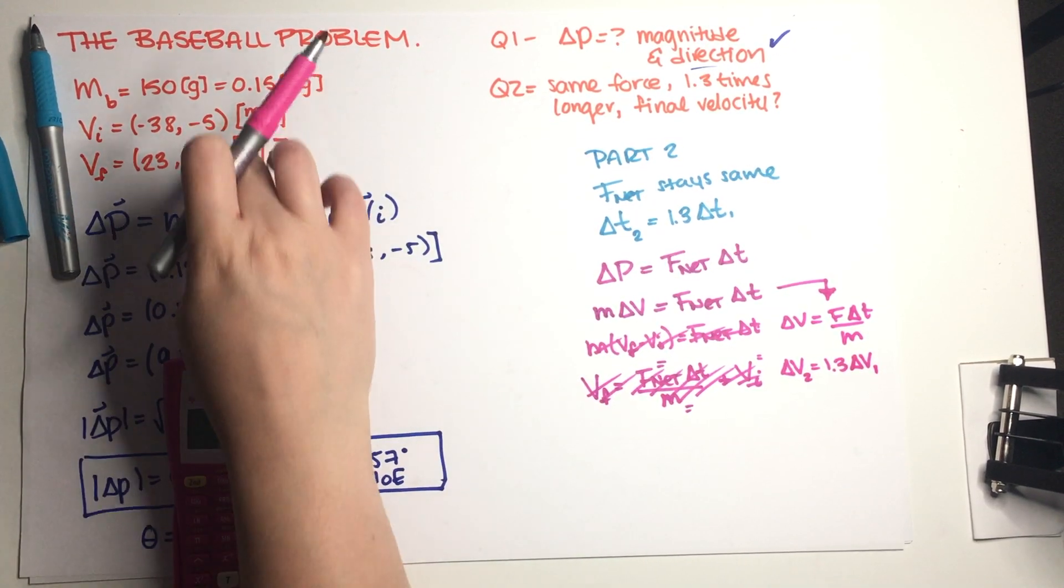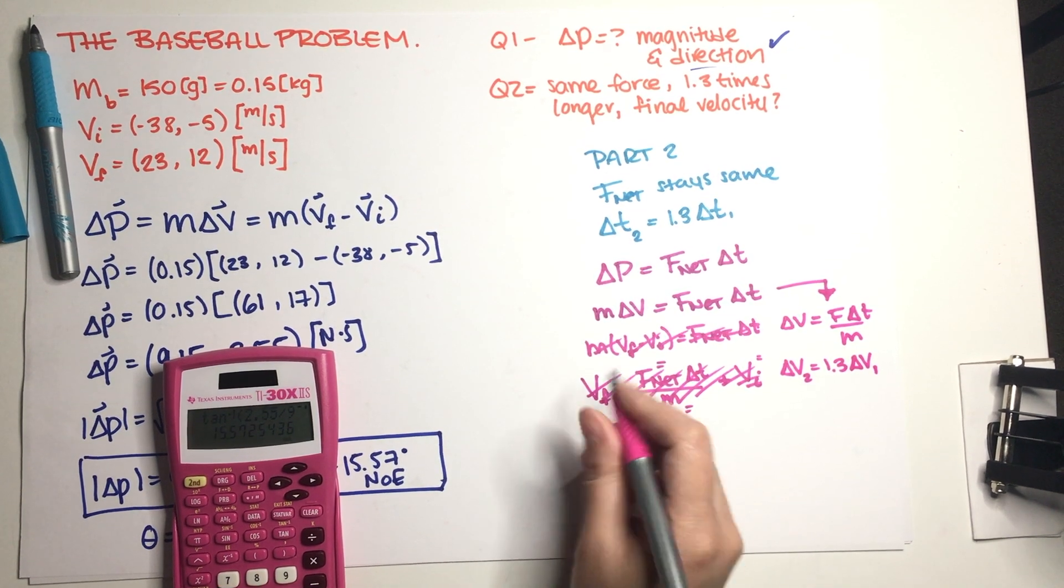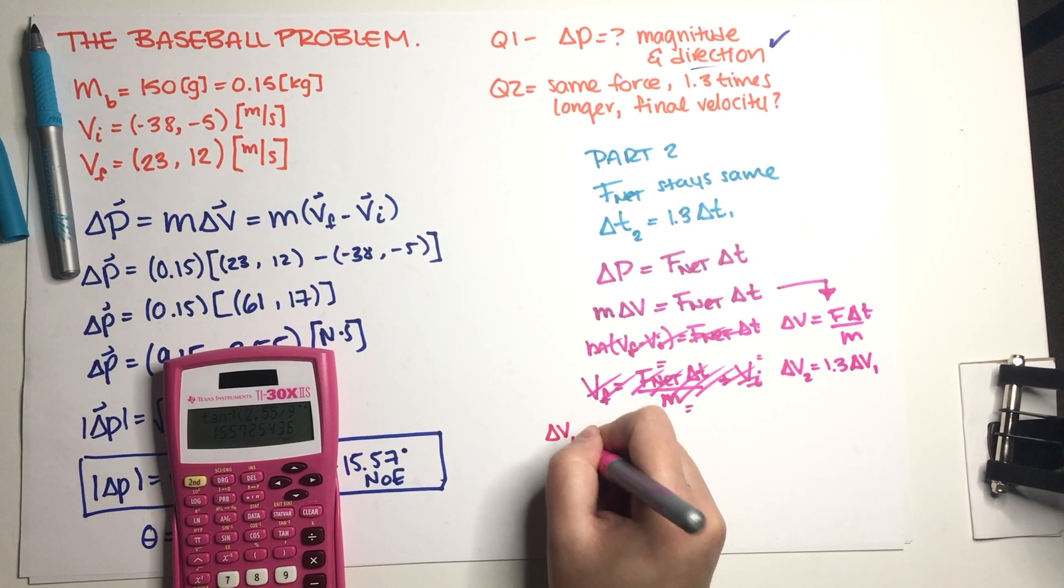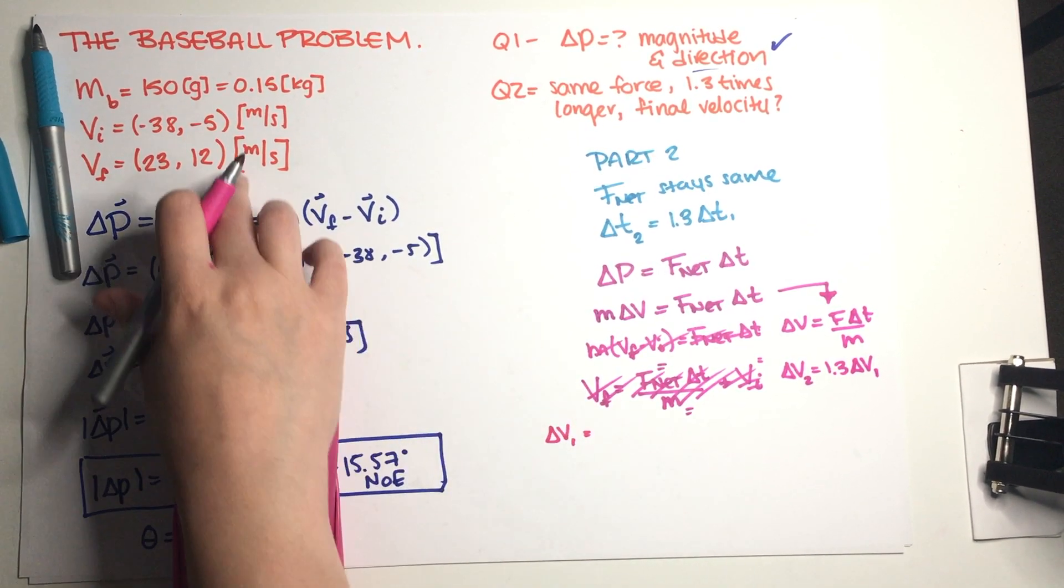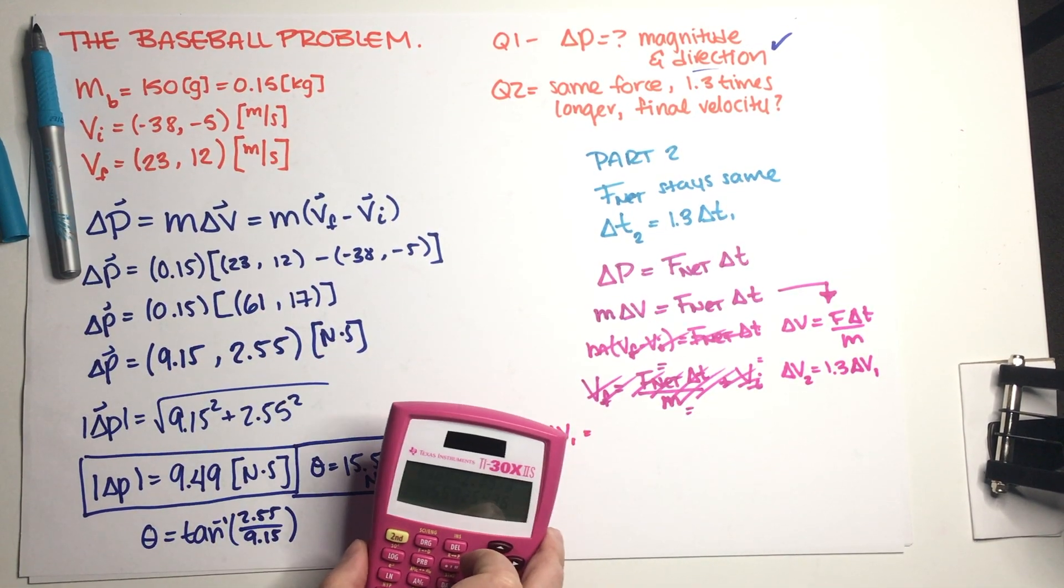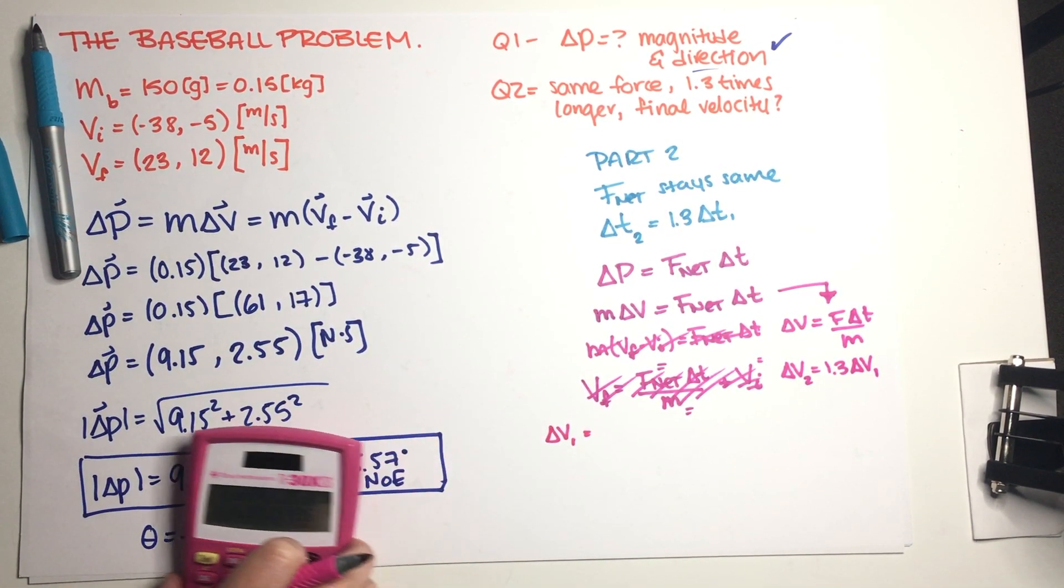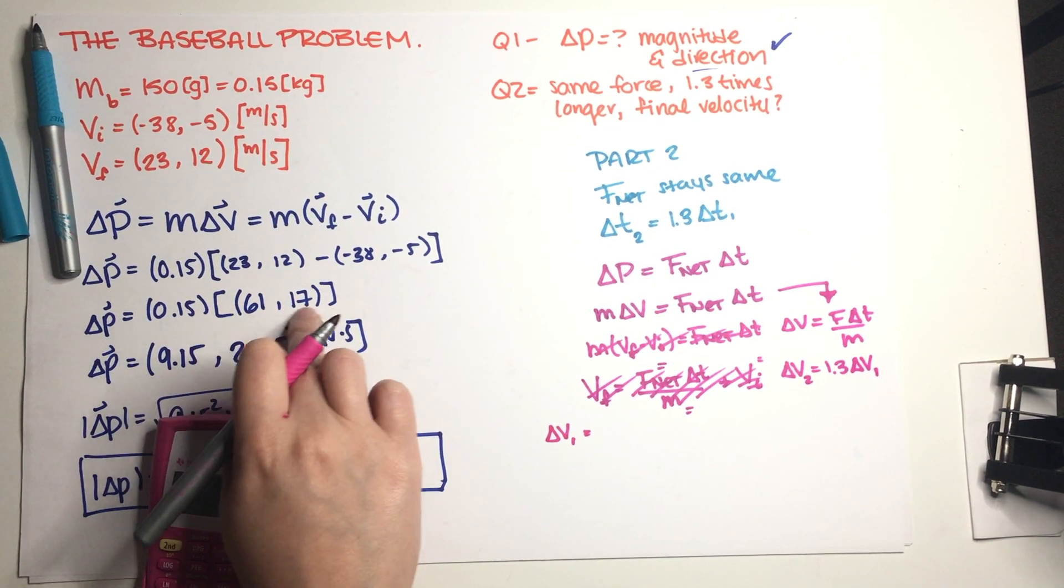So delta v1 is just this subtraction of the original quantities. Do I already have that number? Yeah, 61 and 17, this is delta v.